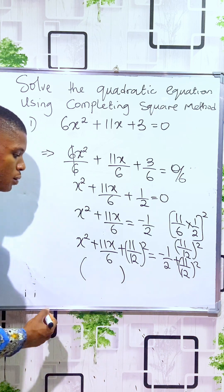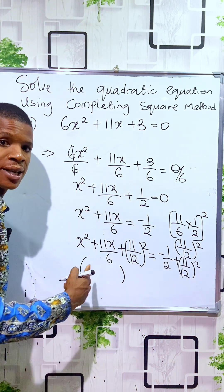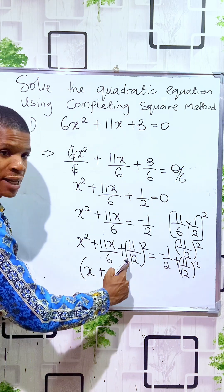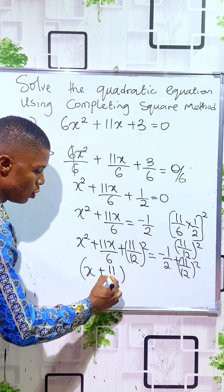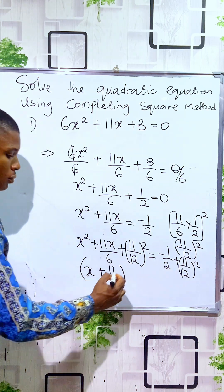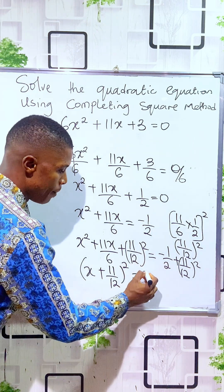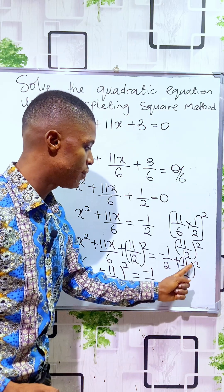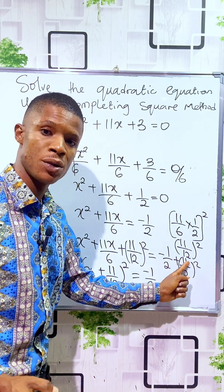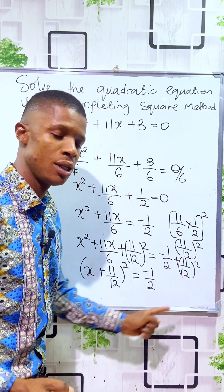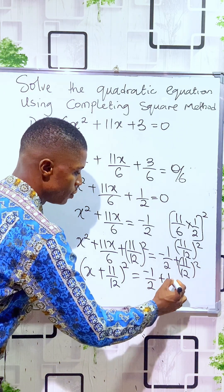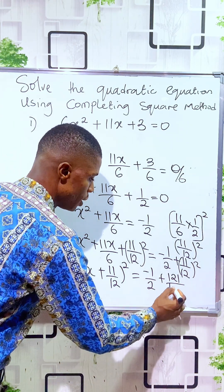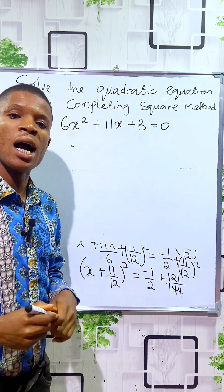We open up the two brackets. The variable here is x, so we put down x, then plus the new item we added: (x + 11/12)² equals minus 1/2 plus (11/12)². Now let's expand (11/12)²: the power affects both numerator and denominator, so 11 squared is 121 and 12 squared is 144, giving us 121/144.